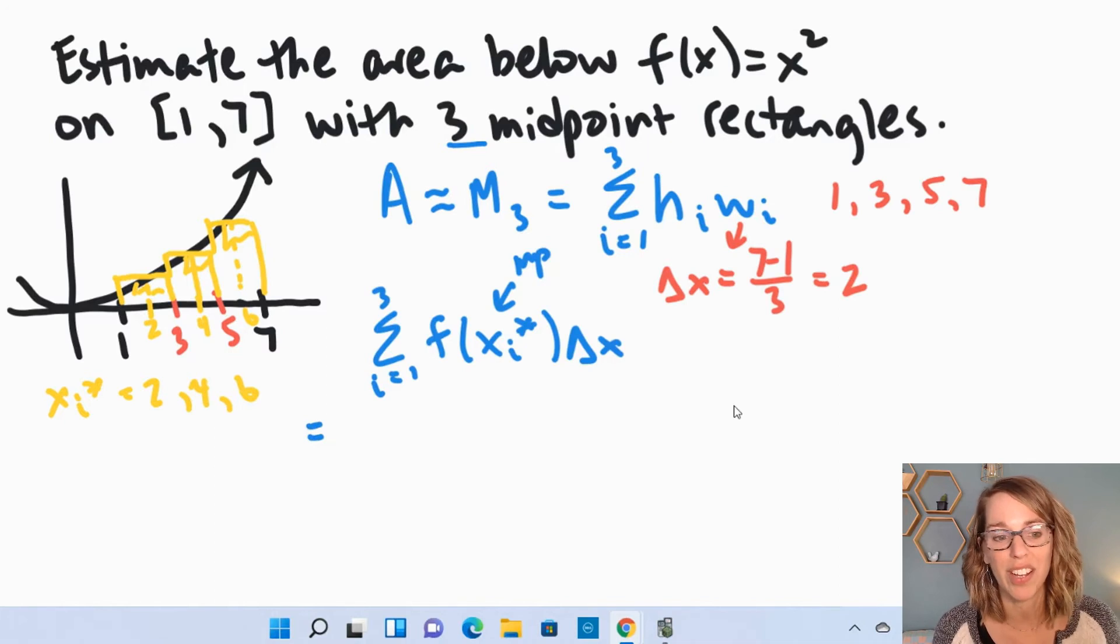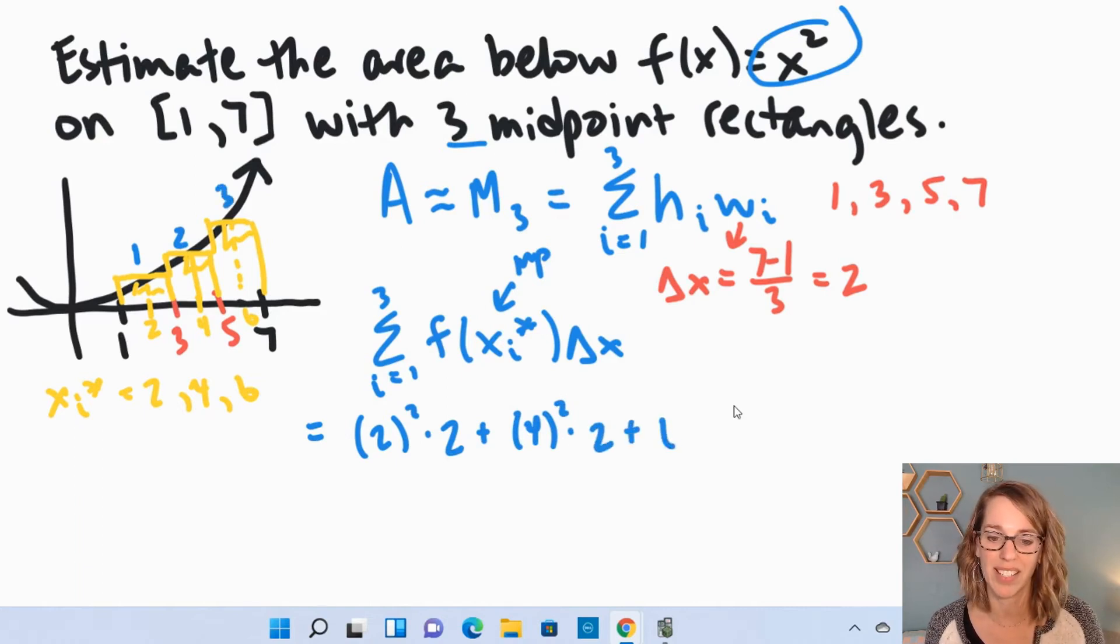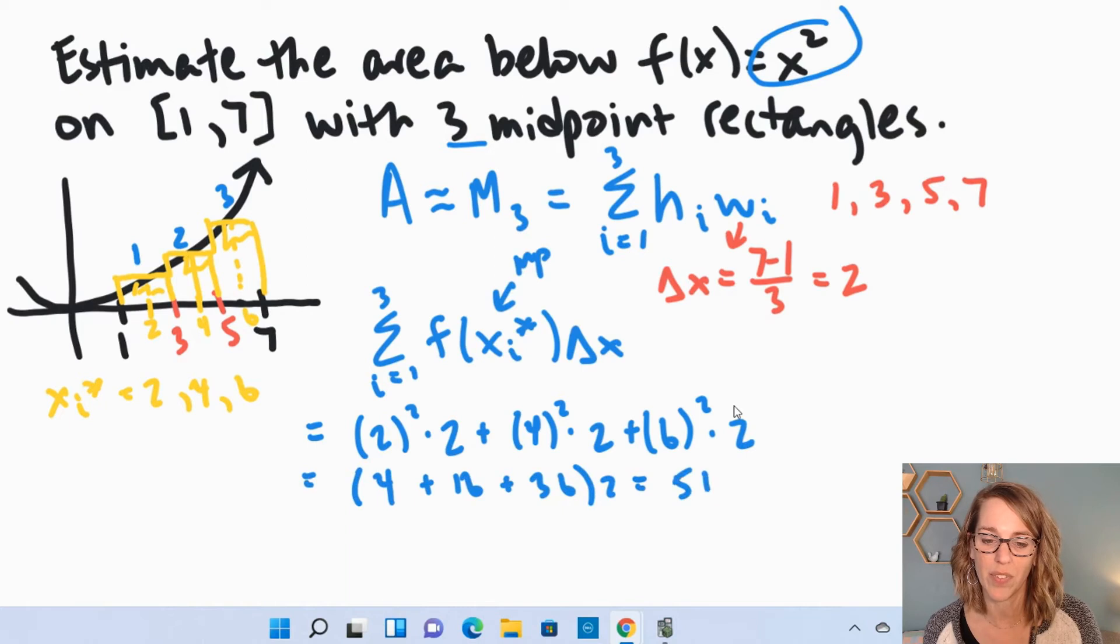So as I expand this summation, I've got the height for the first rectangle times the width of 2, and the height is my function, x squared. So I can go ahead and take 2 squared times my width of 2 plus 4 squared times 2, plus 6 squared times 2. I can pull that 2 outside, so that's 4 plus 16 plus 36, all times 2. That's 56 times 2, or 112.